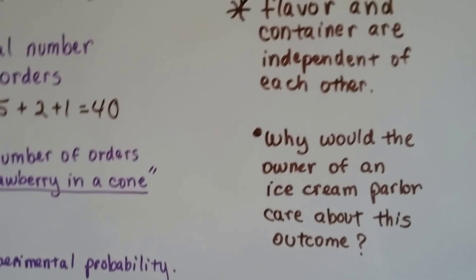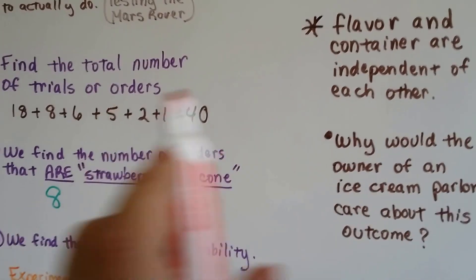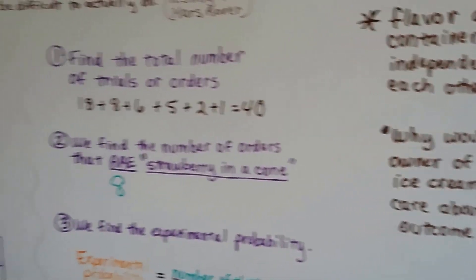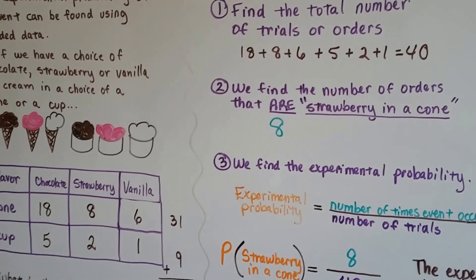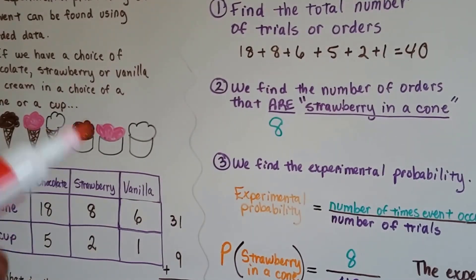So, the flavor and container are completely independent of each other. It doesn't matter if it's in a cup or a cone. It's the person's preference. And either one could be picked.